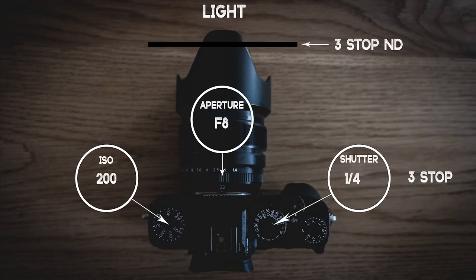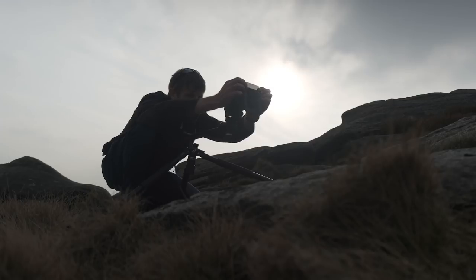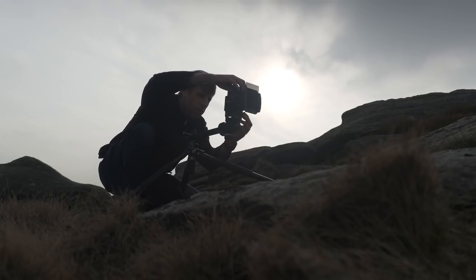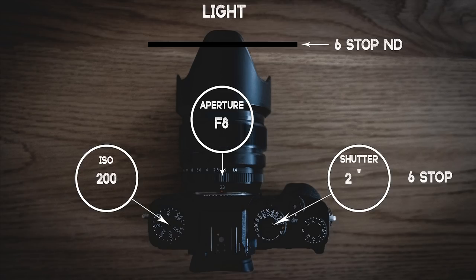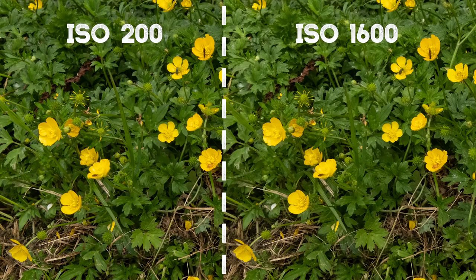Maybe we don't want that dreamy milky water effect that two seconds gives us. The option would be to put a three-stop filter on, giving a quarter of a second exposure. But filters are expensive — I personally don't have a three-stop; I have a 10-stop and a six-stop, and the thought of paying out more money and carrying more weight for a three-stop is off-putting. So what I tend to do is increase my ISO up three stops while using the six-stop filter, which gives the same result — a quarter of a second shutter speed — with just a little more noise. But at ISO 1600 it's so negligible you can't really see it, unless you're pixel-peeping.